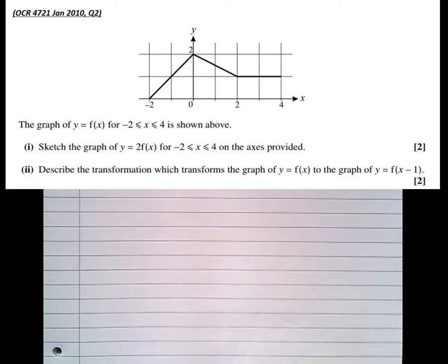So it says the graph of y equals f of x for minus 2 to 4 is shown above. Sketch the graph of y equals 2f of x for minus 2 to 4 on the axes provided.